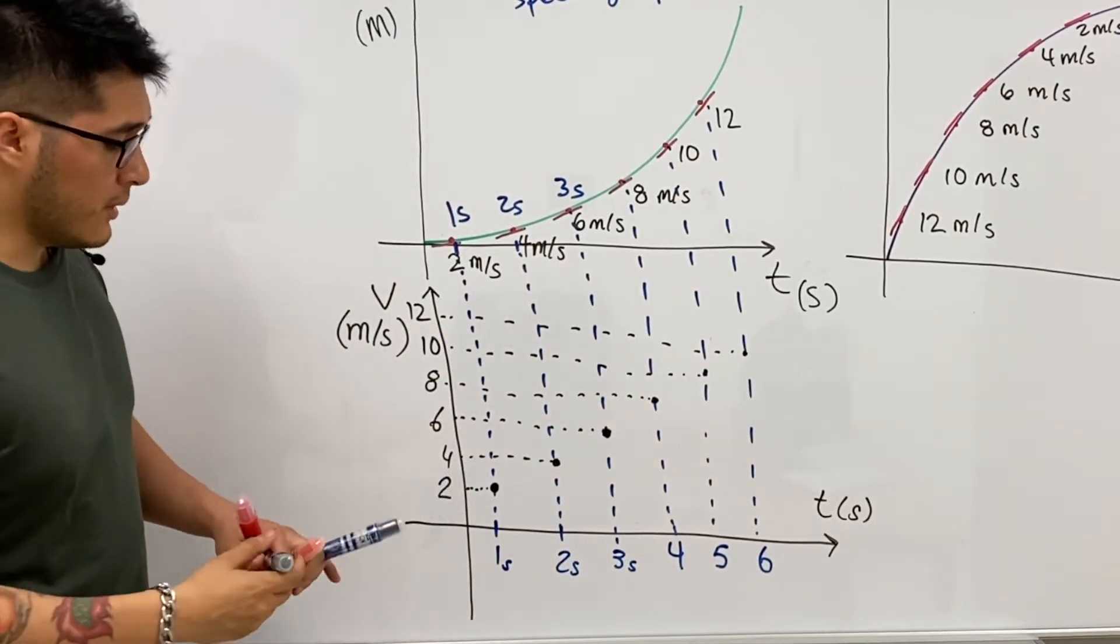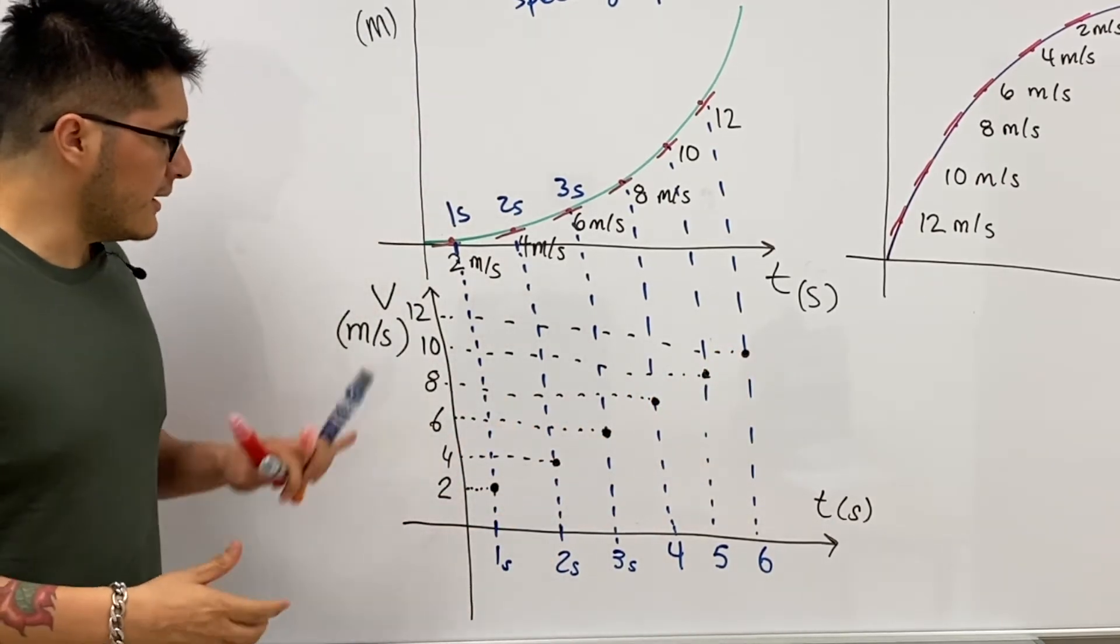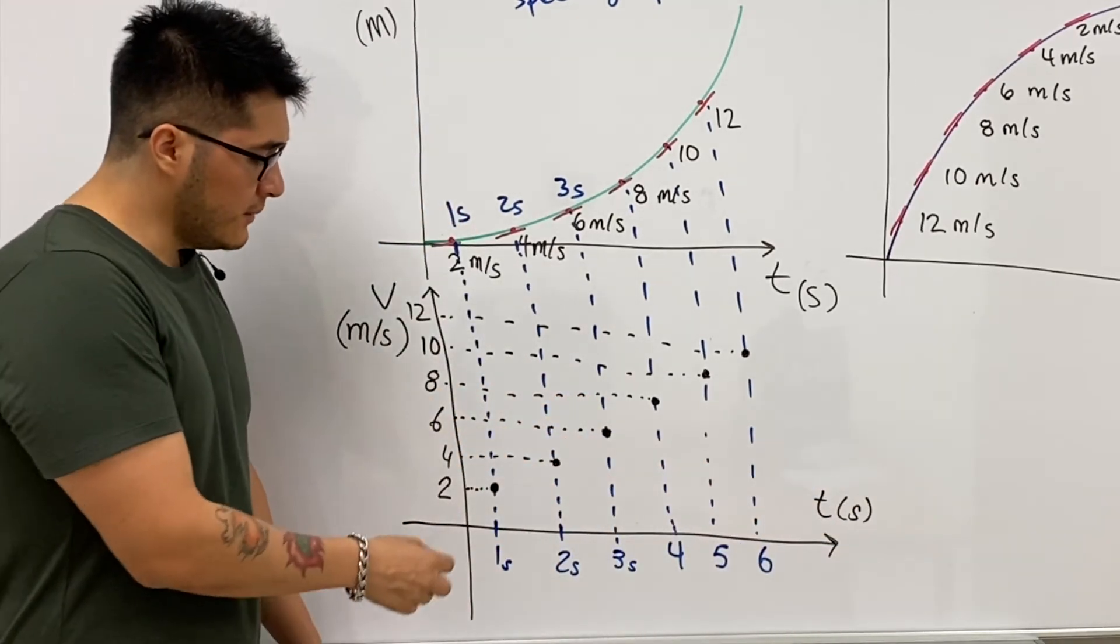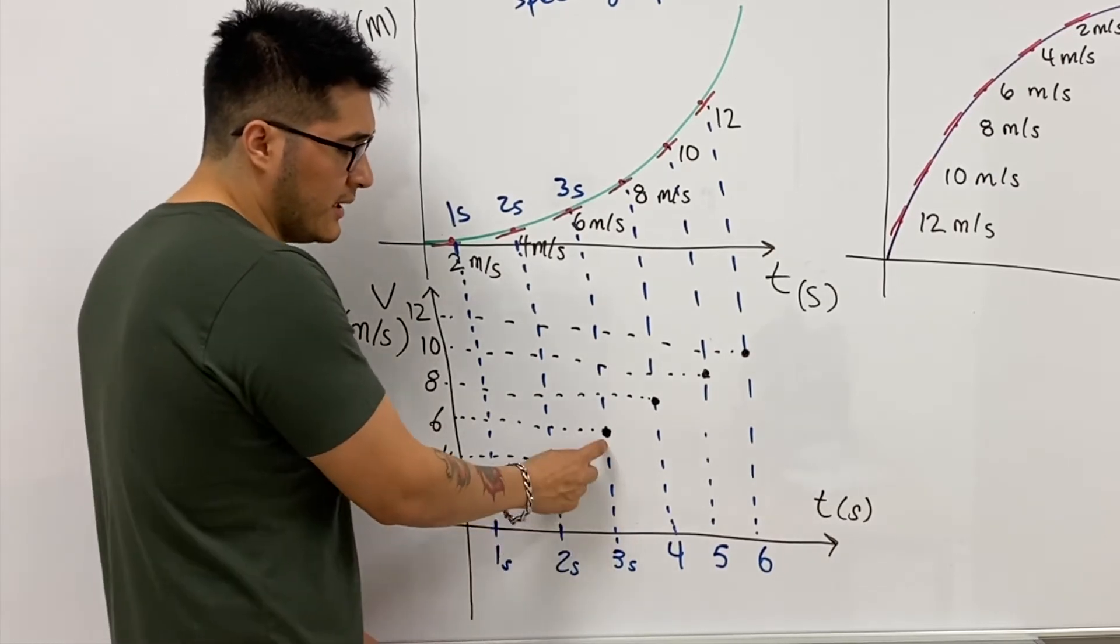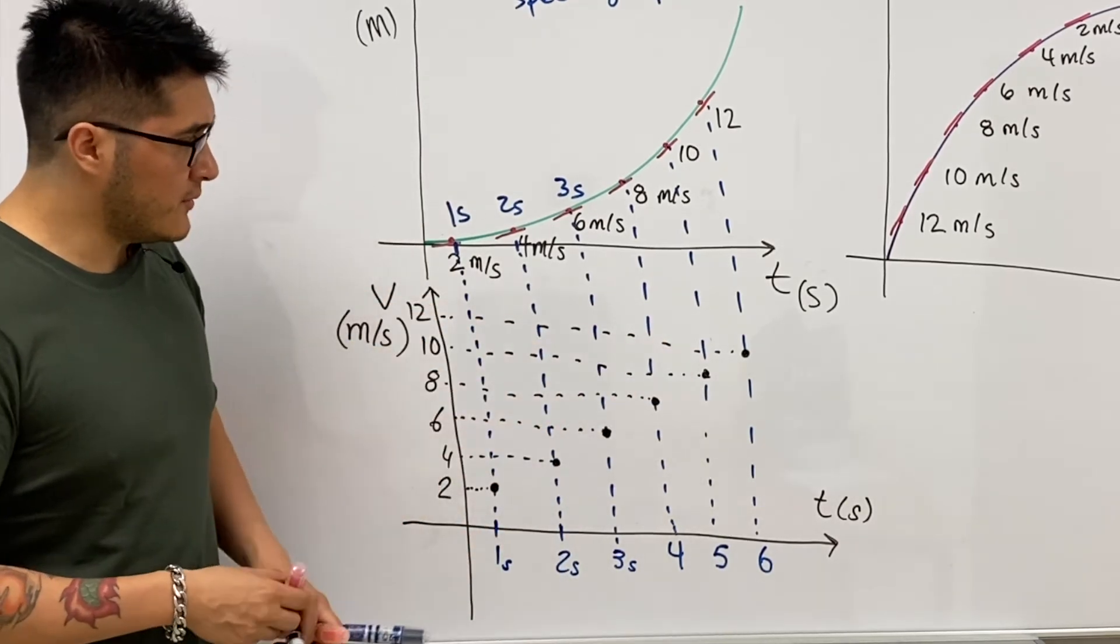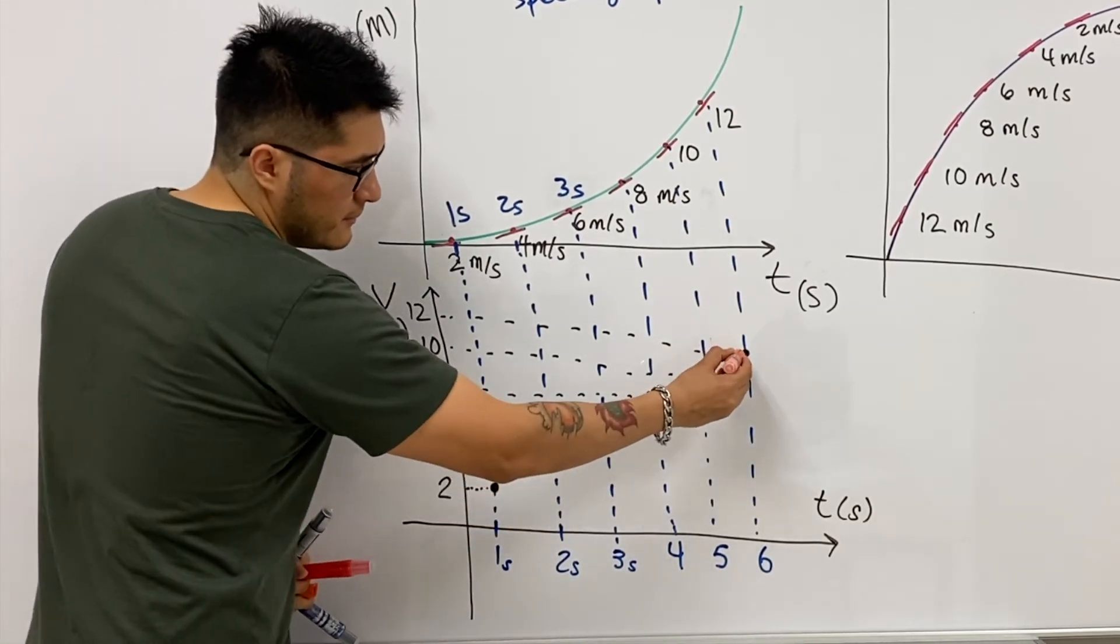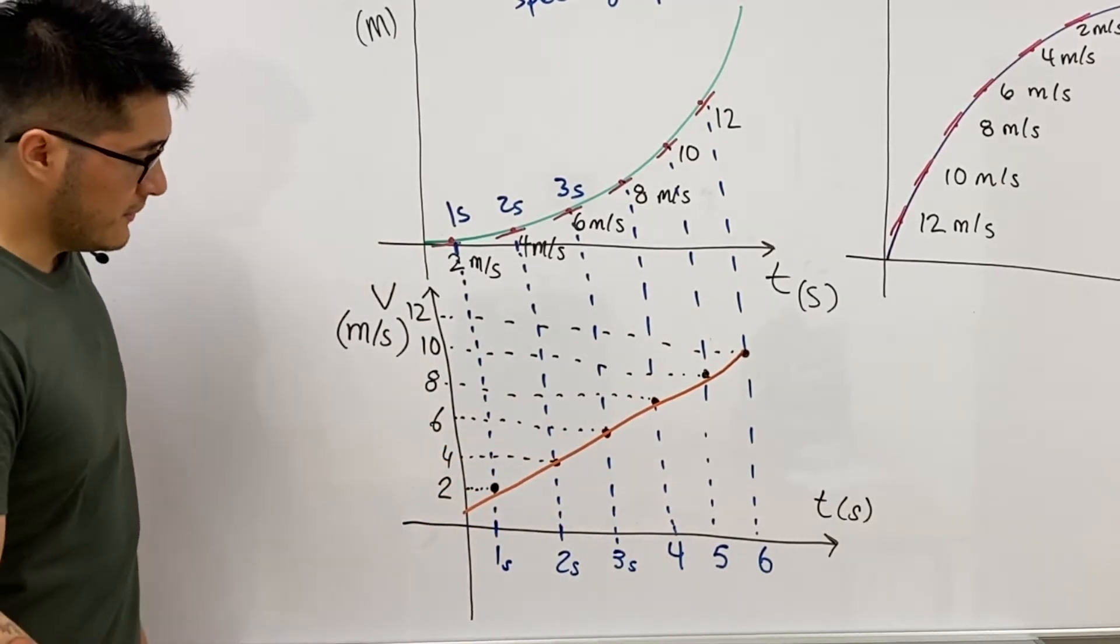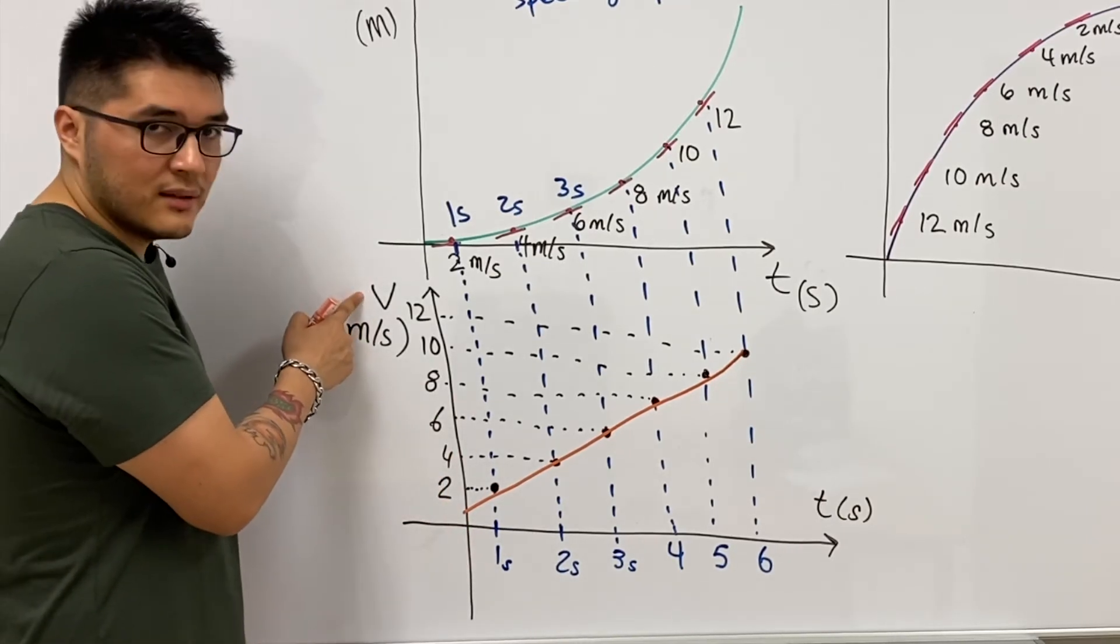All right, so here we have a few points. And this is just representing how the velocity is changing with respect to time. And as you can see, this shows exactly the velocity at one second, at two seconds, three seconds, four seconds, and so on. But we can follow a trend. So here to have a line of best fit, we can see that this is a linear graph. This is another way to represent the motion of an object, through a velocity time graph.